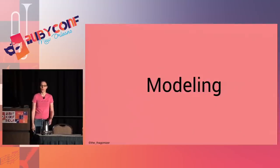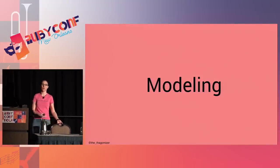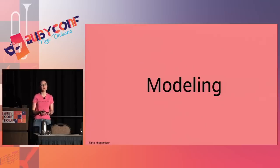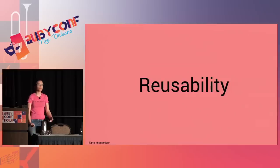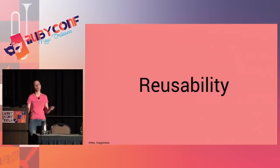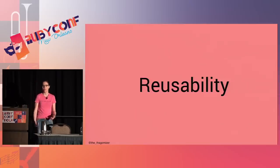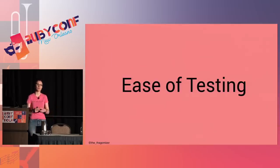Some strengths of OO: it's really good at modeling what we do in real life. We think about the world through concepts that closely align with objects. Objects are also reusable — think about the standard library: arrays, hashes, and strings are all objects we reuse in different ways. I also think objects are easier to test — I can test an object in isolation and then test the seams between objects when testing the system as a whole.